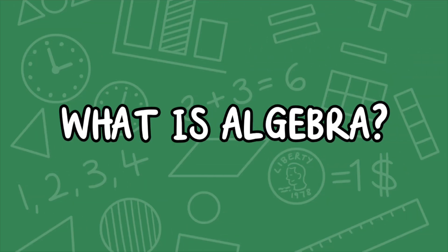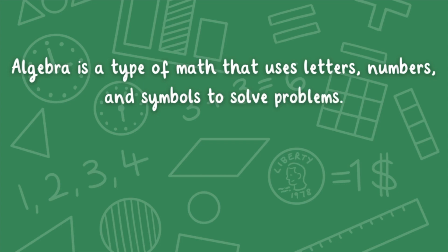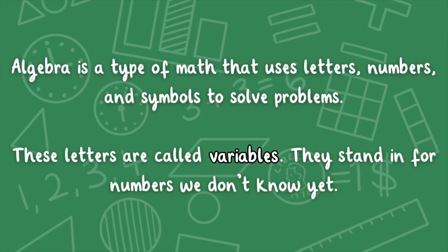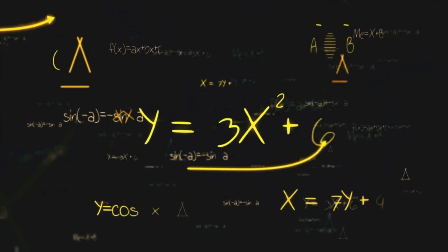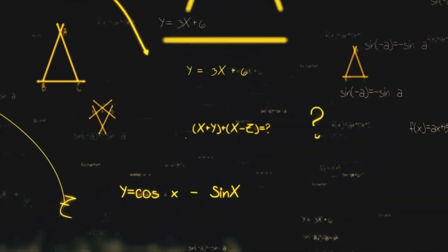What is algebra? Algebra is a type of math that uses letters, numbers, and symbols to solve problems. These letters are called variables. They stand in for numbers we don't know yet. It's kind of like a mystery. You get clues, and you have to figure out what number the letter stands for.